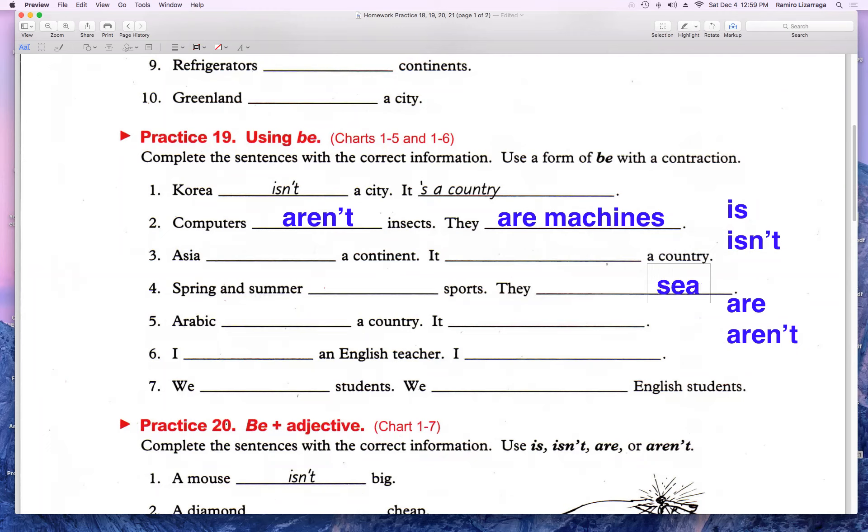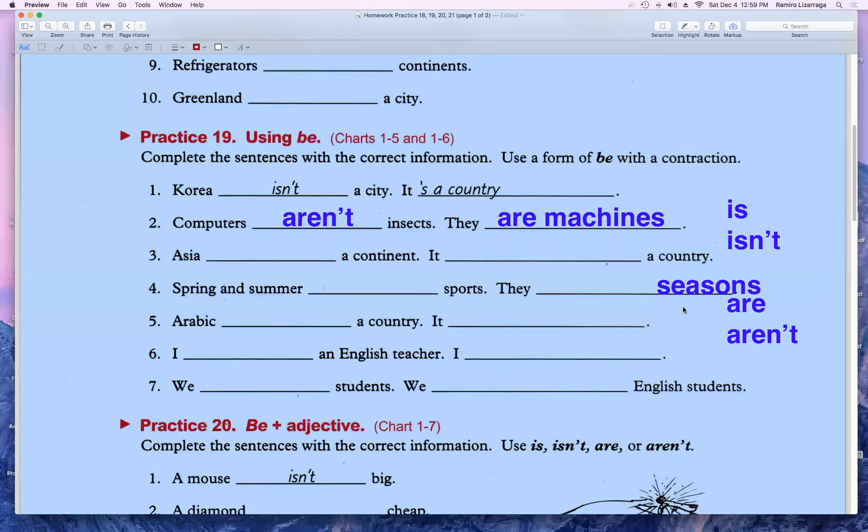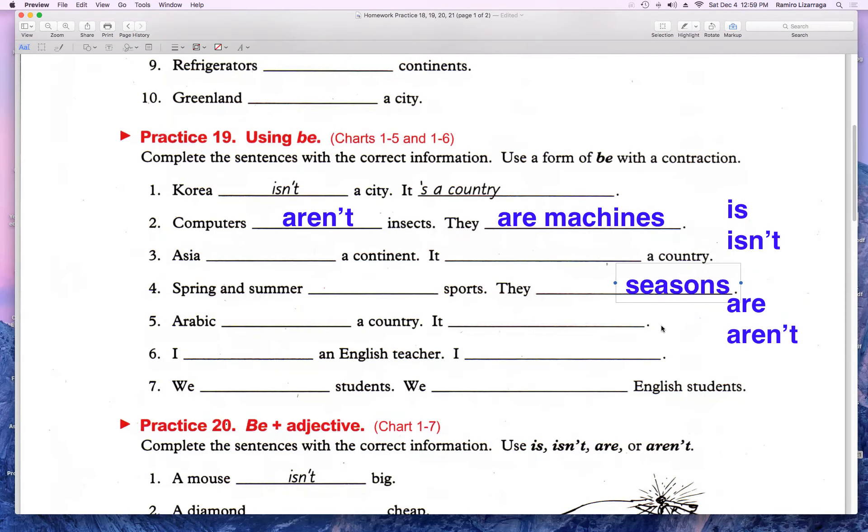Seasons. Seasons, ¿se acuerdan? Es algo parecido. Entonces estos son seasons. Entonces hay que decir lo que es. Por ejemplo, el árabe es un idioma. Pero no es un país. En esta oración ustedes van a decir no es un país. Entonces, ¿qué es? Pues acaban de decir es un lenguaje. Es un idioma. ¿Cómo se dice eso? Language. Es un lenguaje. Ahí tienen que decir lo que es. Eso es en la 19.